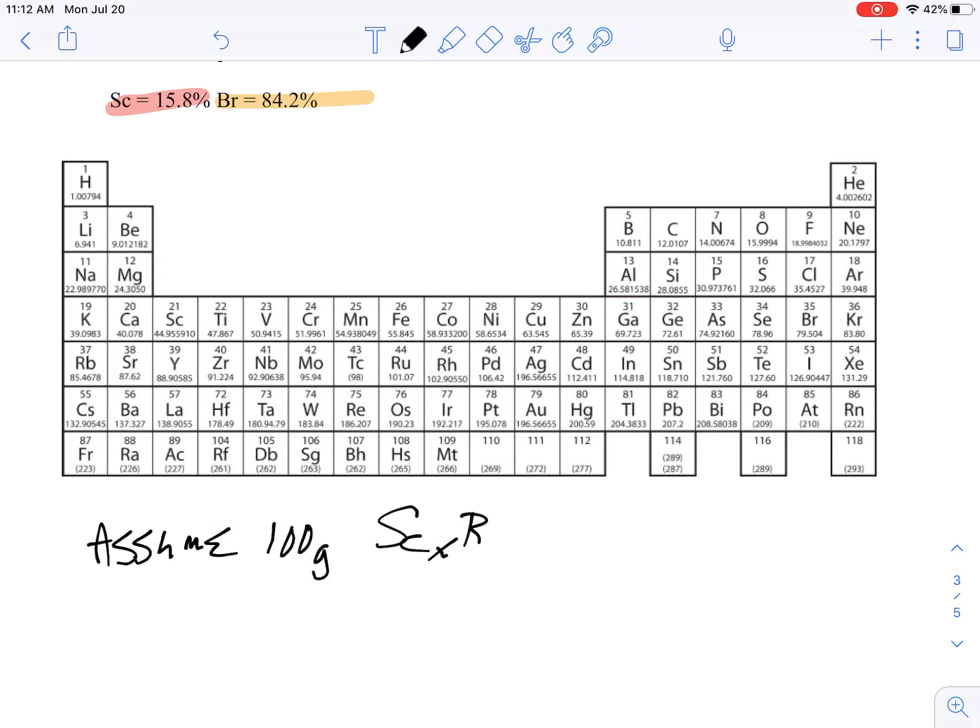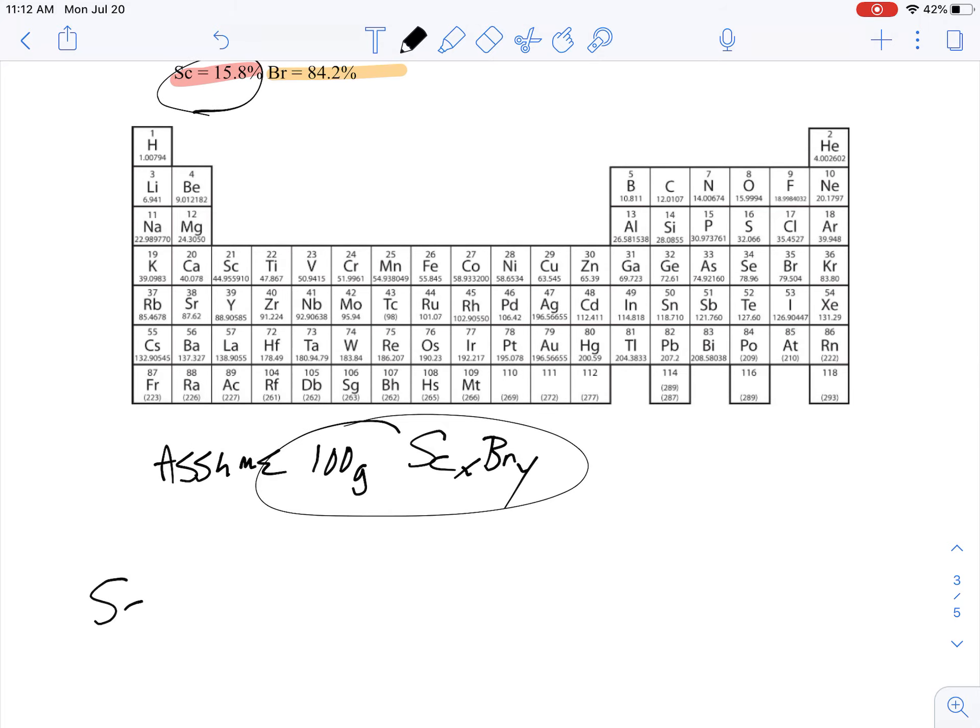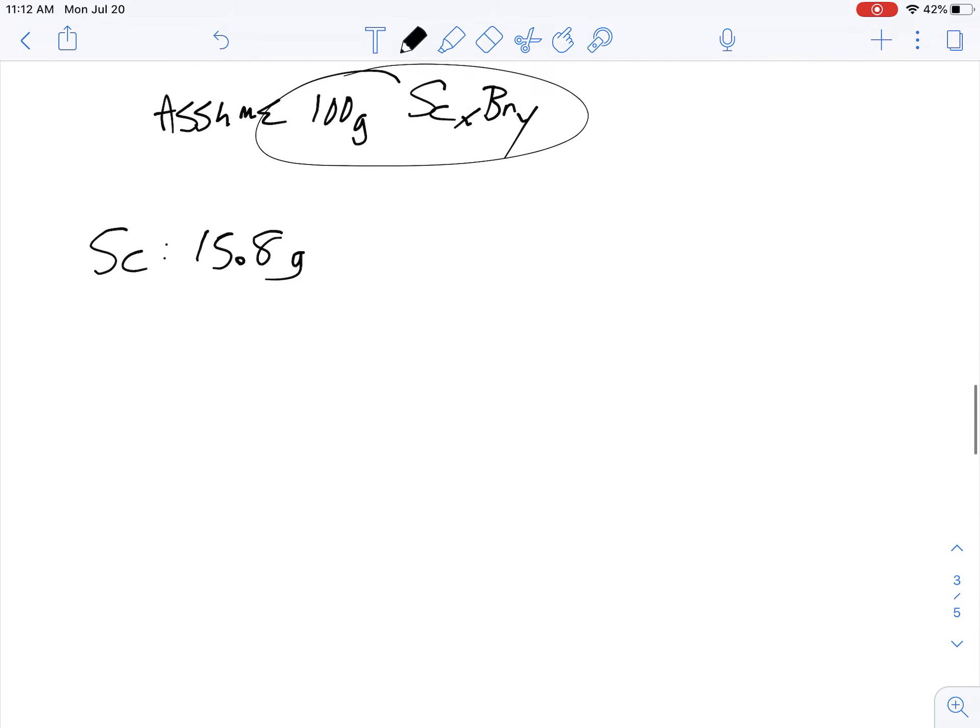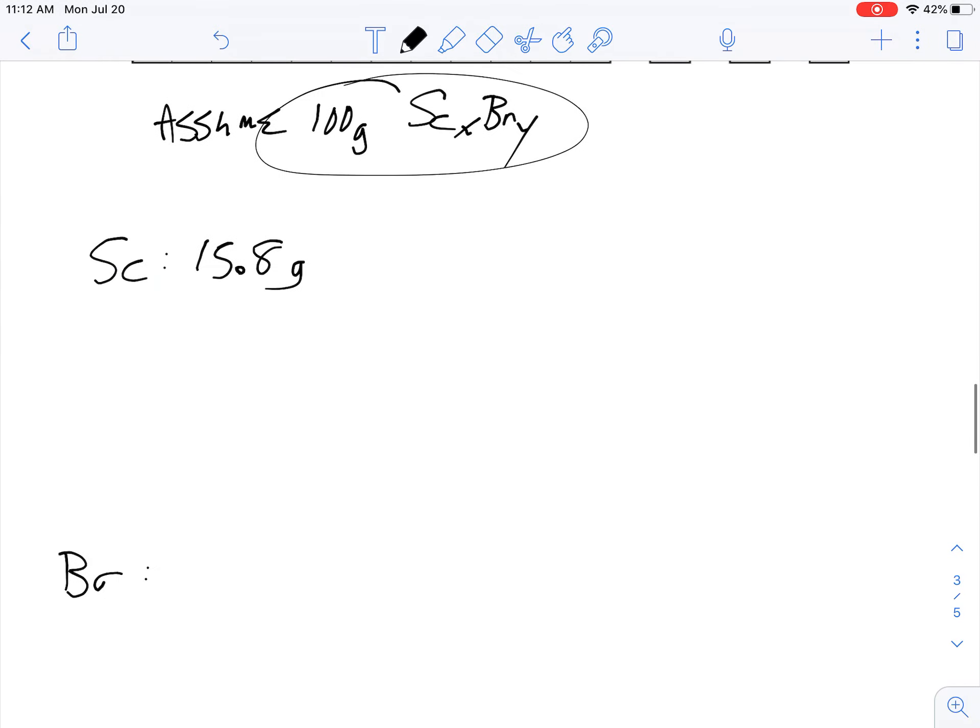Why 100? Because it makes percentages ridiculously simple. So if I have 100 grams of ScₓBrᵧ and 15.8% of it is scandium, that means for scandium I'm going to have 15.8 grams, and then for bromine I'm going to have 84.2 grams.